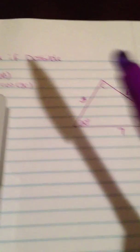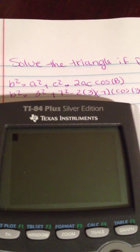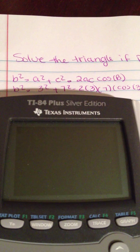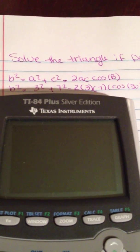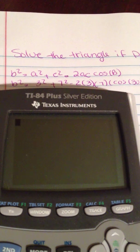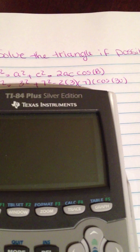We'll use the law of cosines to find b. The law of cosines is b² = a² + c² - 2ac·cos(B). So b² = 3² + 7² - 2(3)(7)cos(30°).